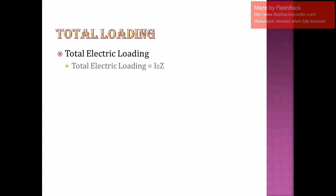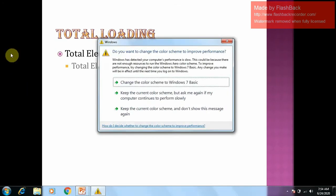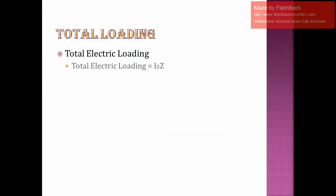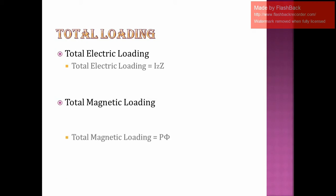Iz is the total current through the conductor and Z is the total number of conductors. The product of Iz and Z is known as total electric loading. Similarly, total magnetic loading is defined as the total flux around the stator periphery at the air gap, which equals the product of total number of poles and flux generated per pole.